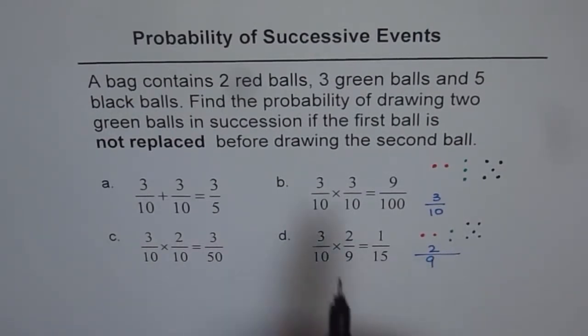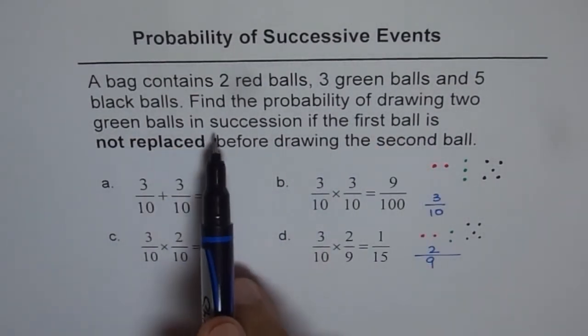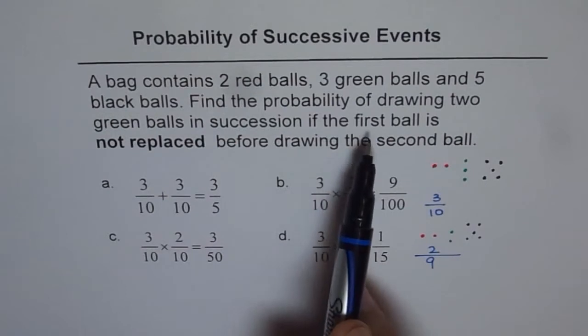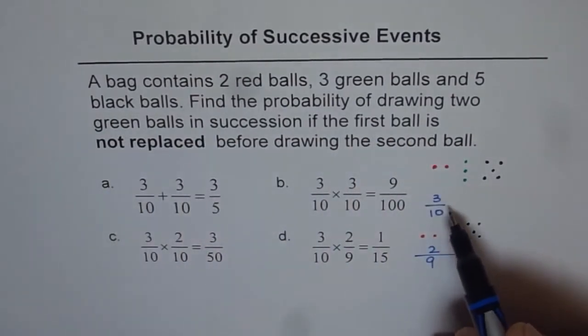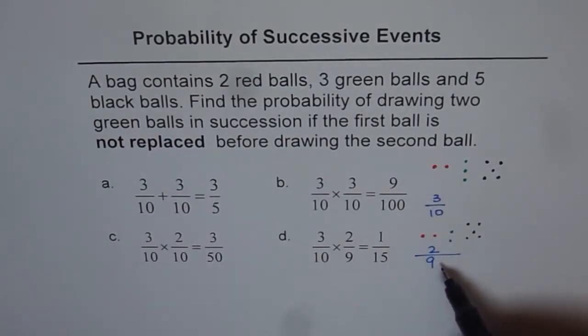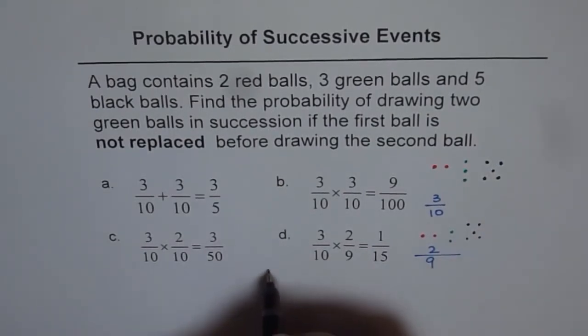Now the question is, find the probability of drawing two green balls in succession if the first ball is not replaced before drawing the second ball. So the probability should be product of these two. That means three out of ten times two out of nine.